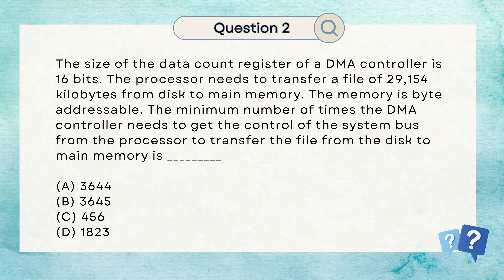The minimum number of times the DMA controller needs to get the control of the system bus from the processor to transfer the file. We have asked the minimum number of times the DMA controller needs to be able to transfer the file from disk to main memory. Let's solve the question and then we will identify the correct option.